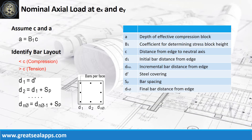Let the value of neutral axis C correspond to the given eccentricity for the x-axis and y-axis. Identify bar layouts with their distances from the edge of the column section and their force type relative to their position from the neutral axis.